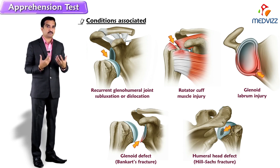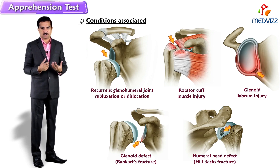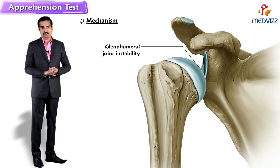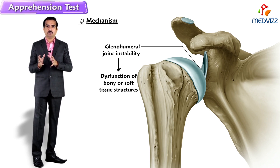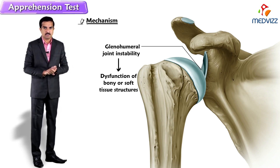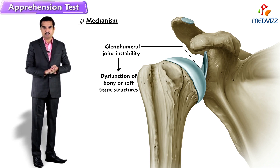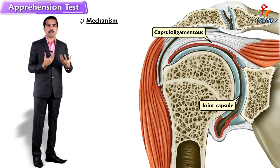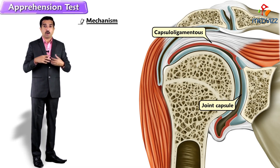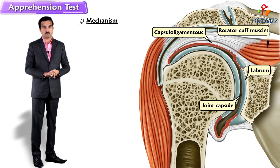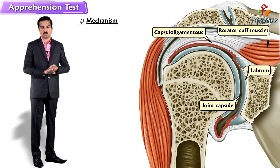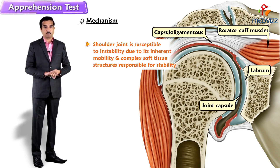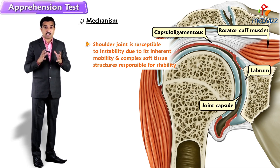In all these conditions you may see positivity of the test. The mechanism is that glenohumeral joint instability is caused by dysfunction of the bony or soft tissue structures that maintain joint stability — mainly the glenoid, humeral head, joint capsule, ligaments, labrum, or rotator cuff muscles. The shoulder joint is particularly susceptible to instability due to its inherent mobility and complex soft tissue stabilizing structures.